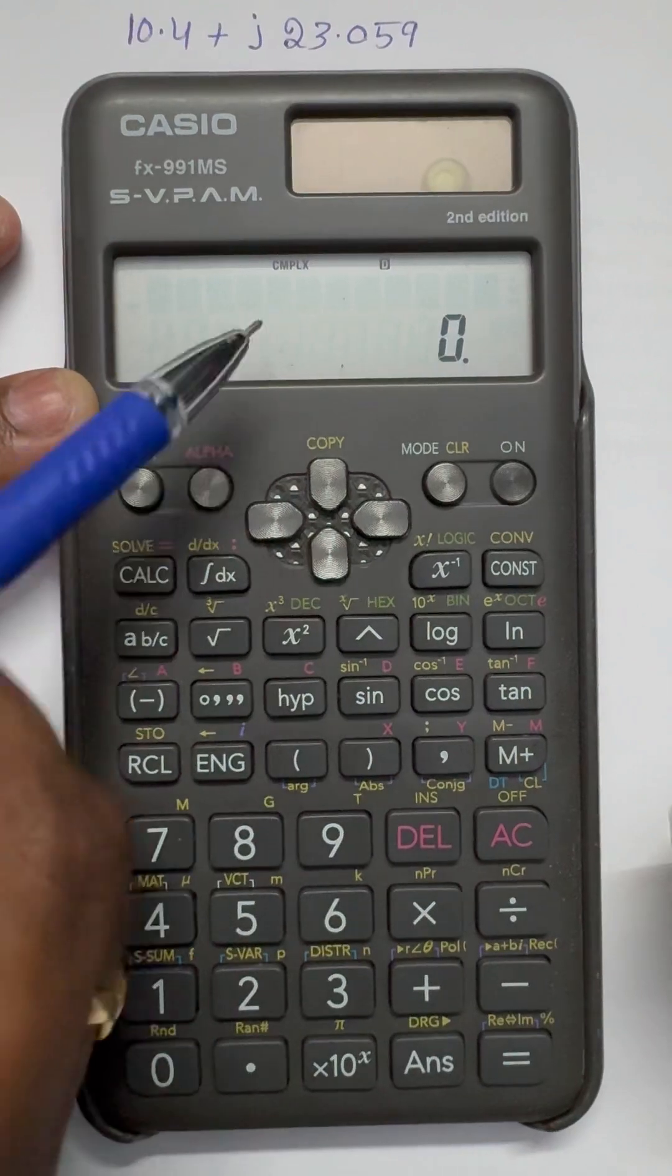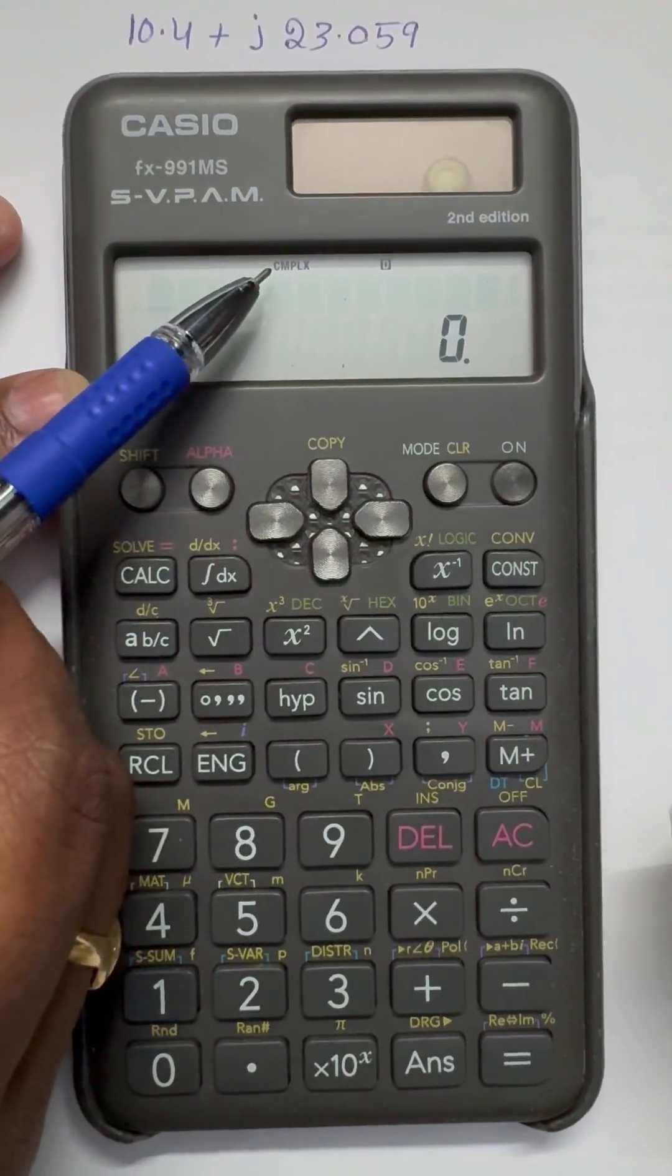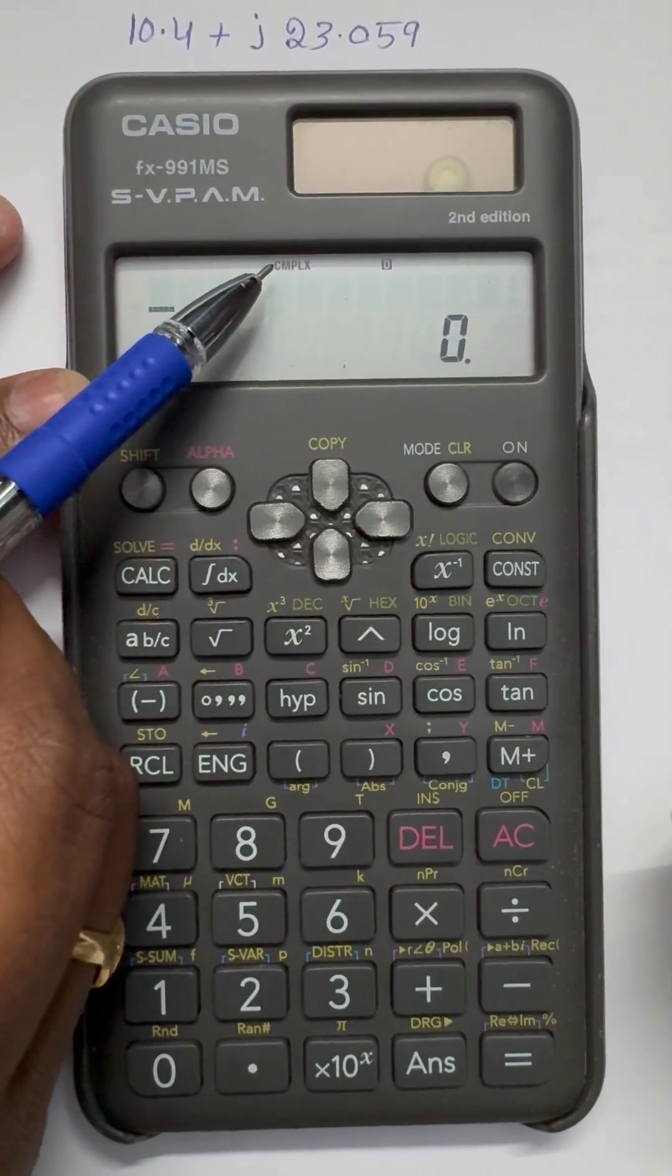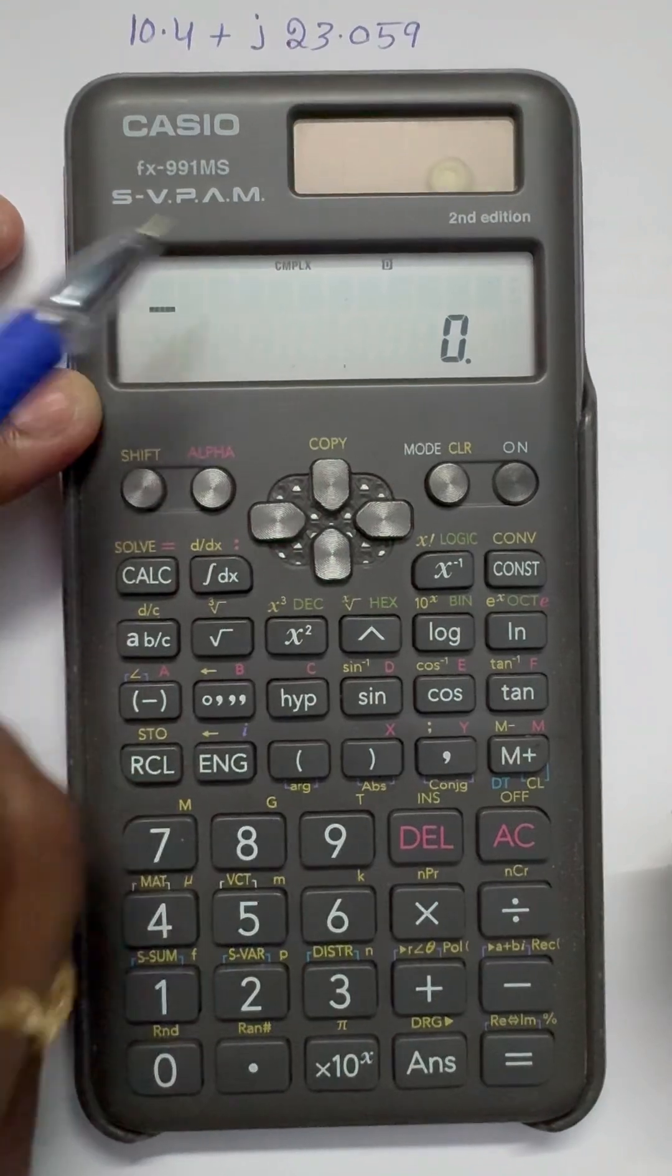Press two. Now look at here, it is now in complex mode. It will be in complex mode now.